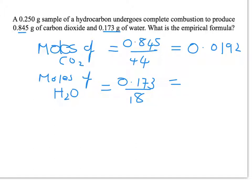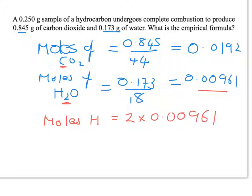We're going to get for carbon dioxide 0.0192, and for water we will get 0.00961. Now for carbon dioxide, the number of moles of carbon dioxide is equal to the number of moles of carbon, because in every one carbon dioxide there's only one carbon. However for water, there are actually two hydrogen atoms in every molecule of water. So when I'm working out the moles of hydrogen I cannot directly use this number.